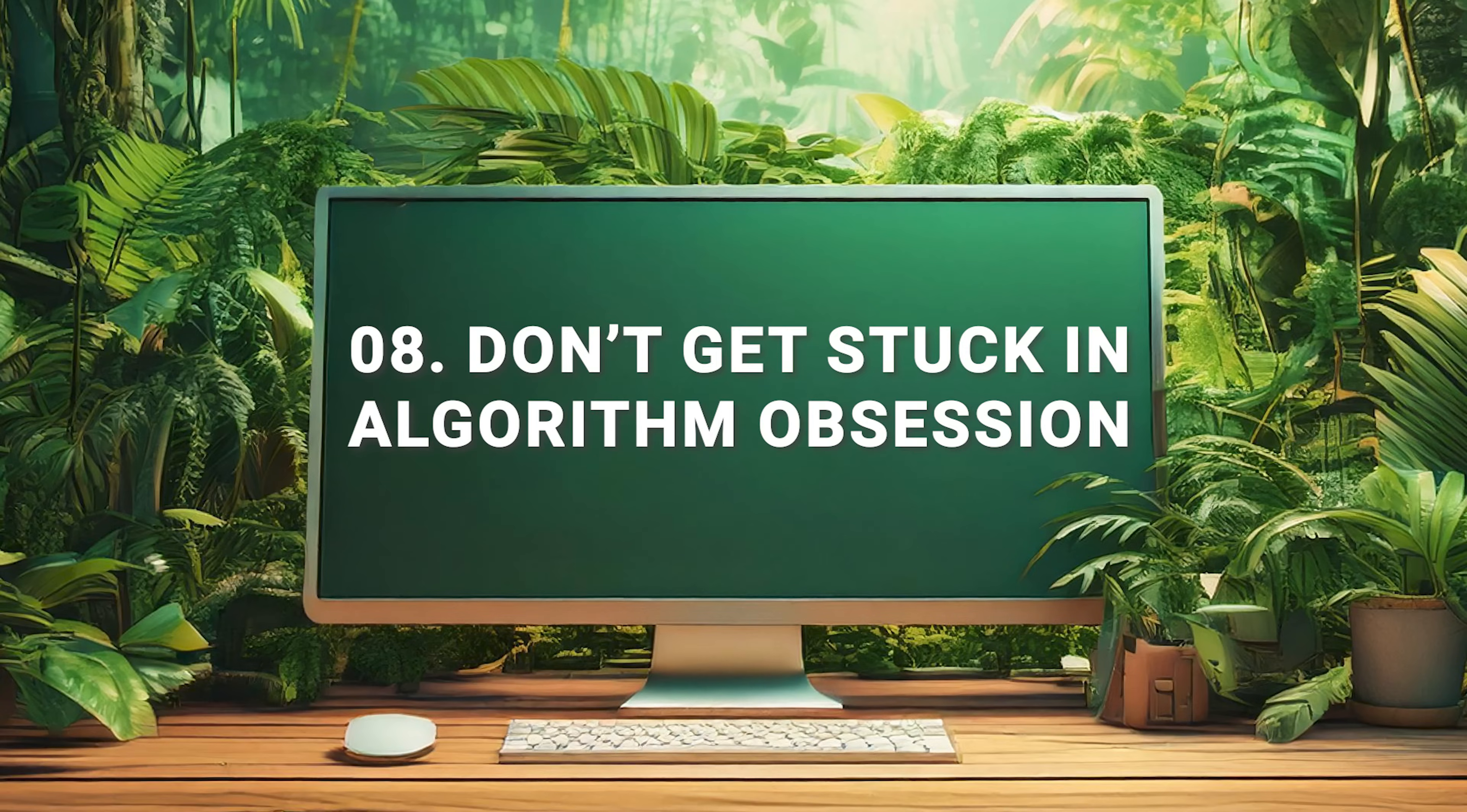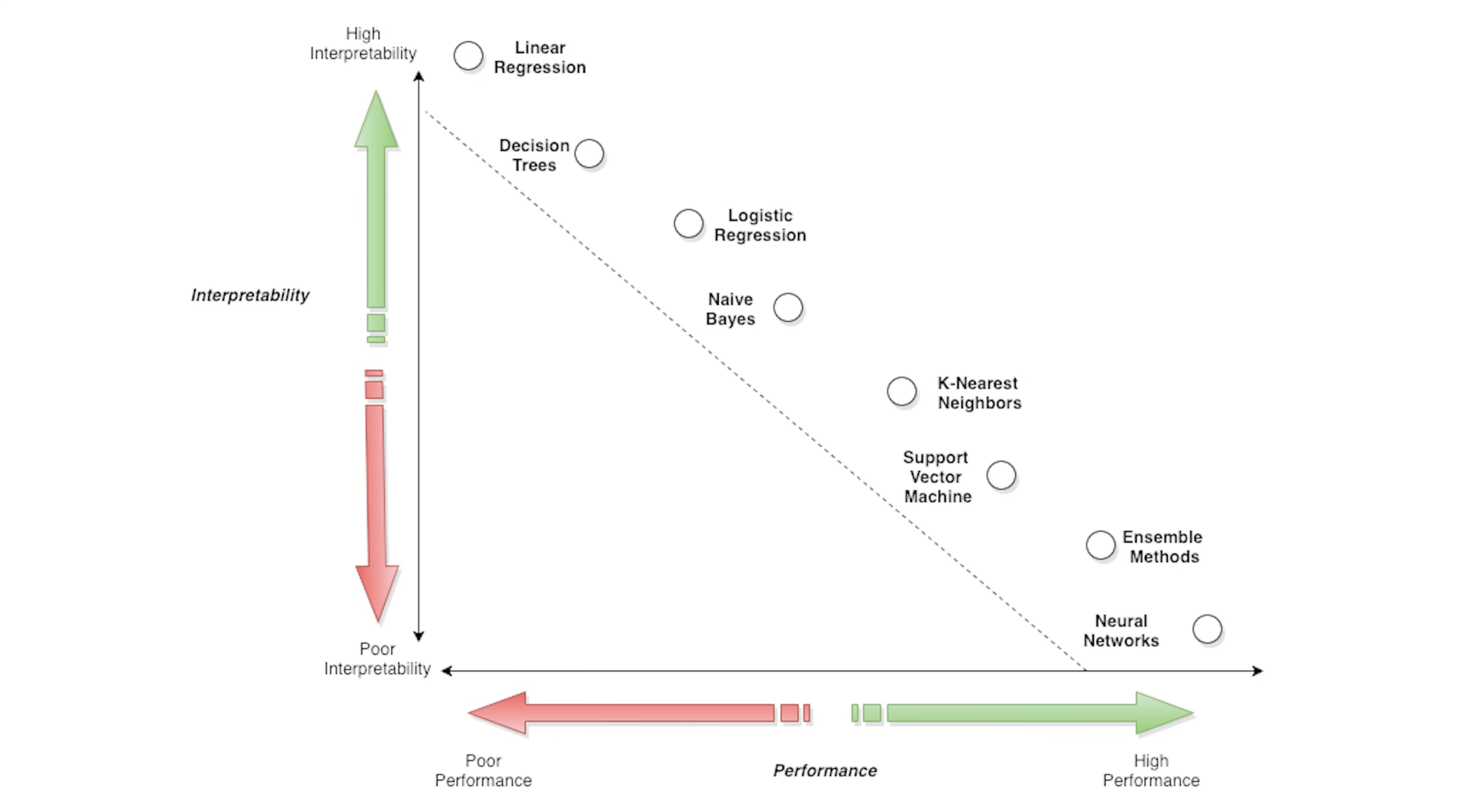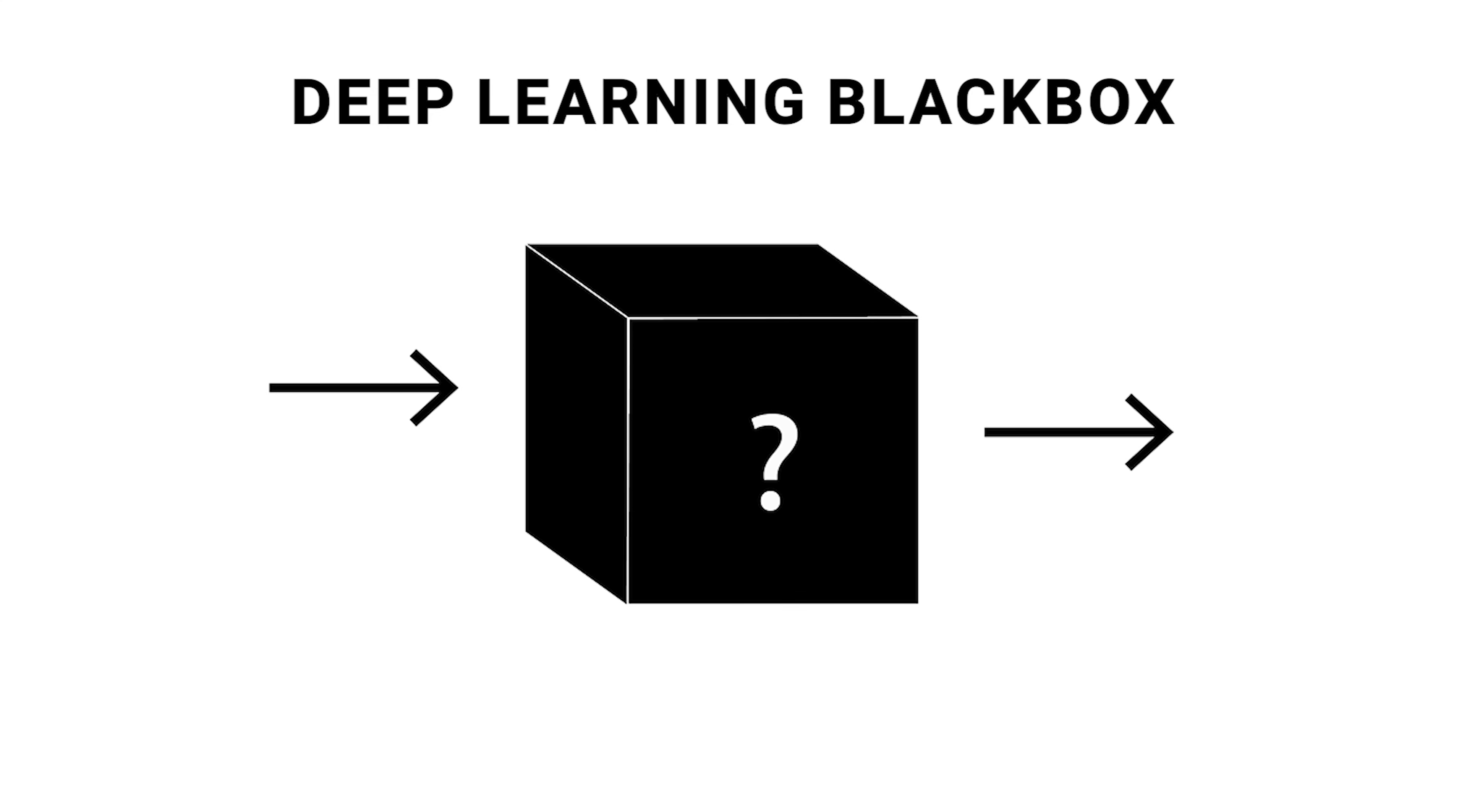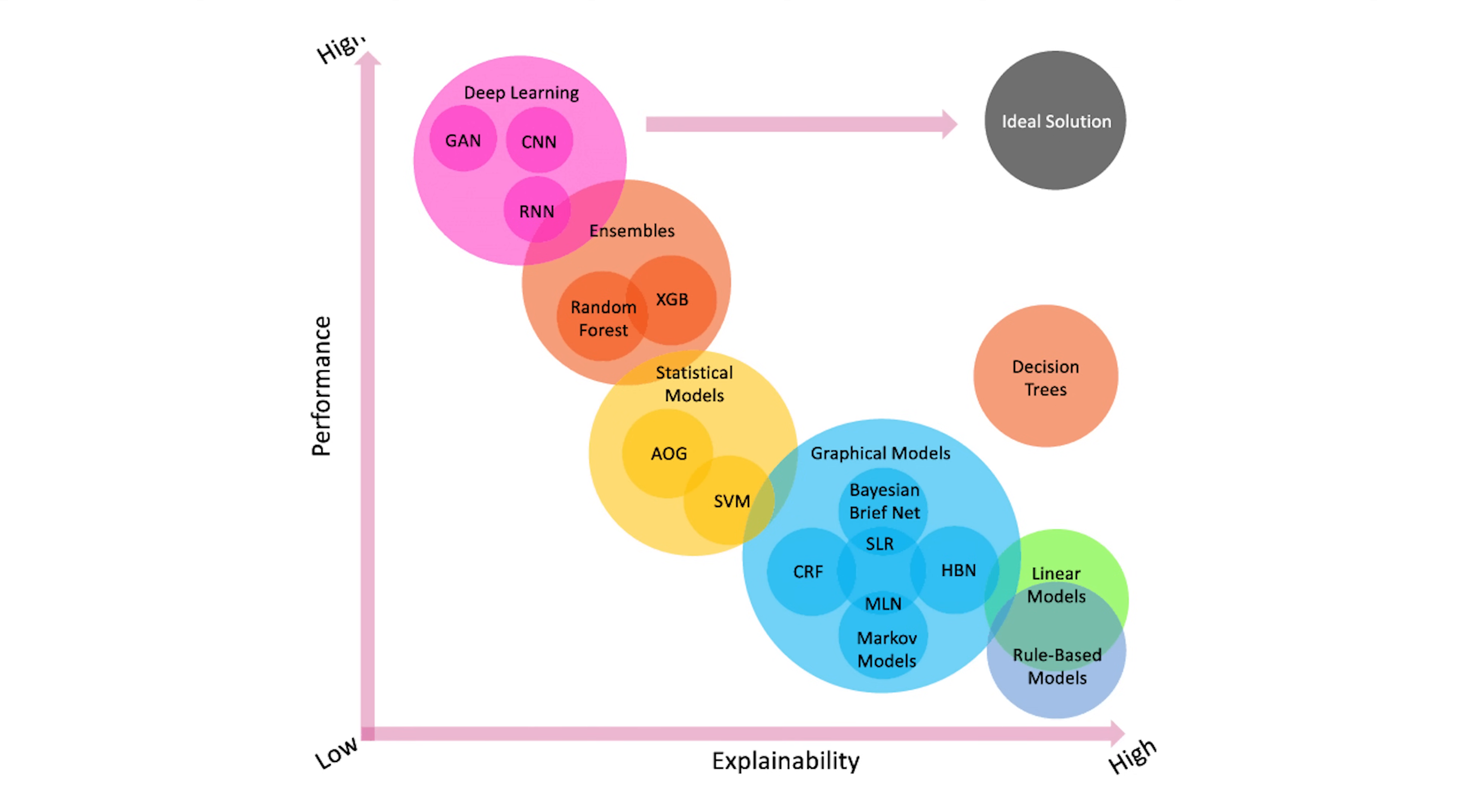Don't get stuck in algorithm obsession. Don't ignore model interpretability and explainability. A complex model like a deep neural network might outperform simpler ones, but being able to explain your model's decisions is critical, especially in industries like healthcare or finance where trust is paramount. Many newcomers focus on using fancy algorithms, for example deep learning, when simpler models like linear regression or decision trees could perform just as well or better for certain tasks. Deep learning tends to give you a black box, often outperforming simpler models, but lacking interpretability and actionable insight, which is often useless in business settings where we want to learn about a problem and act based on our findings.